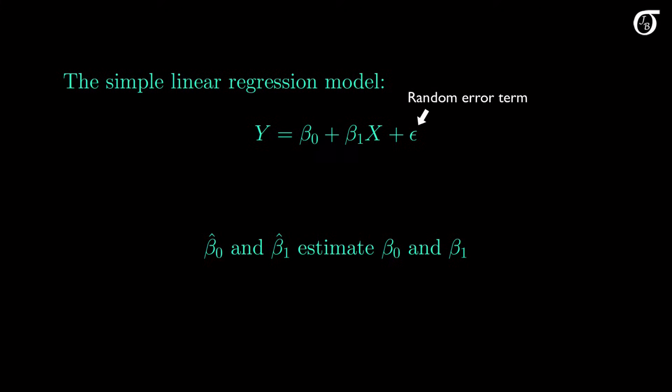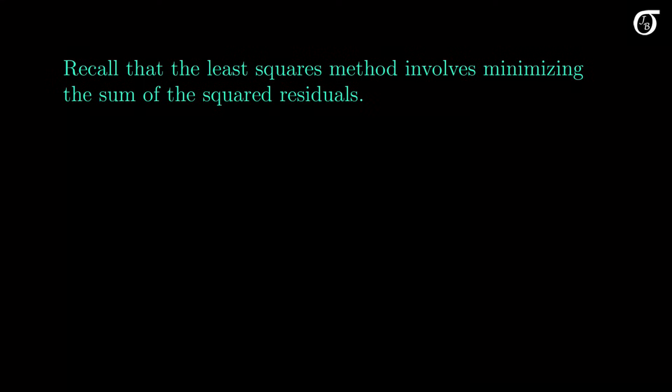Epsilon is a random error term, and it is not itself a parameter. Recall that the least squares method chooses the parameter estimators beta0 hat and beta1 hat such that the sum of squared residuals is minimized.